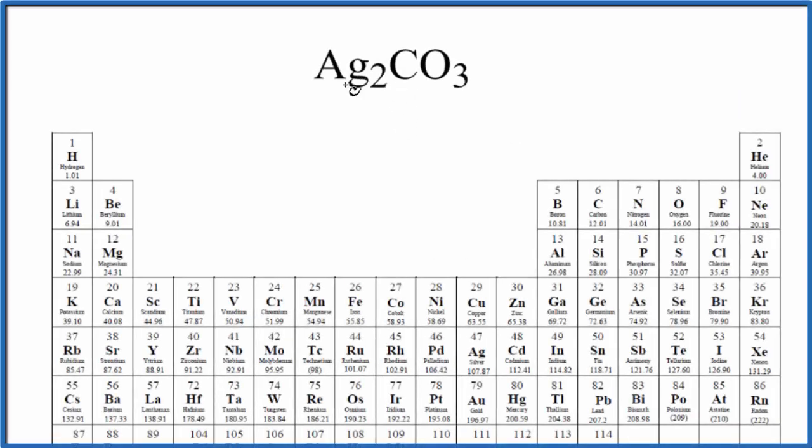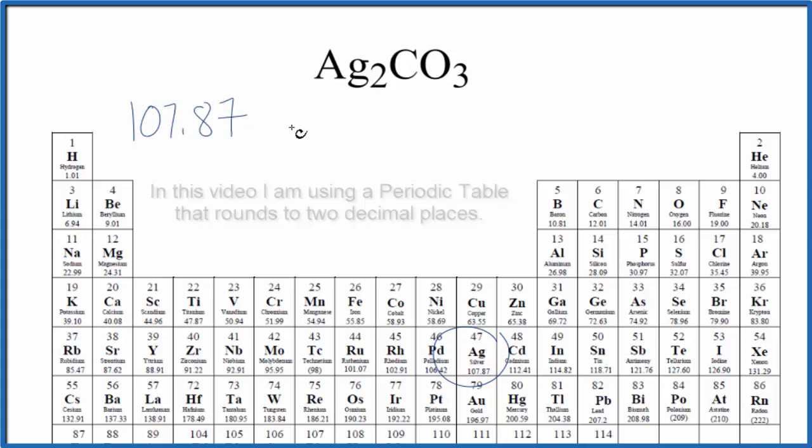In this video we'll find the molar mass for Ag2CO3, silver carbonate. On the periodic table, silver is 107.87, and the units are grams per mole. I won't write that each time; we'll write that at the end.